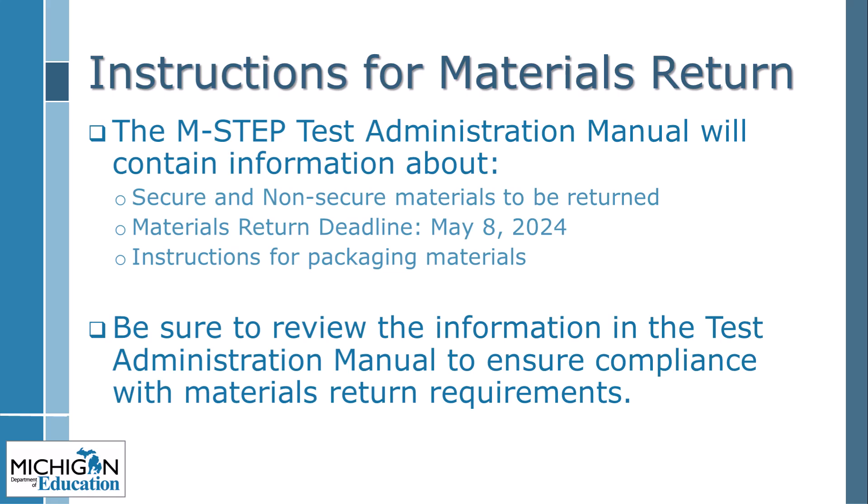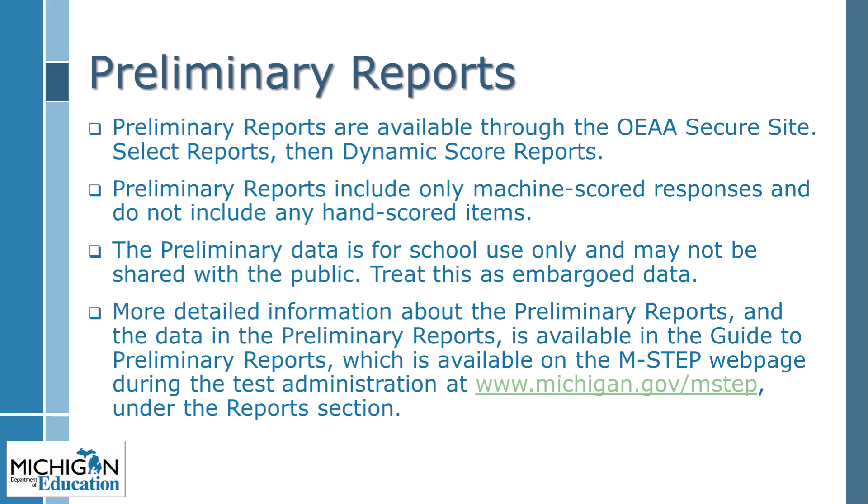The Instructions for Materials Return in the M-STEP TAM lists which secure materials should be returned to the M-STEP contractor, what schools should keep, and what must be destroyed. Secure materials to return include all used answer documents, the orange special handling envelope, all used and unused test booklets, and any accommodated versions of the test. If there are no secure materials to return, it is not necessary to return the orange special handling envelope — securely destroy any unused special handling envelopes. Preliminary reports are available within 48 hours of a student submitting the test and will remain available until final reports are released. They are accessed through the secure site by selecting the Reports drop-down, then Dynamic Score Reports. Preliminary reports include only machine-scored items, not hand-scored items, and preliminary data is for school use only — it may not be shared with the public. Schools must treat this as embargoed data.